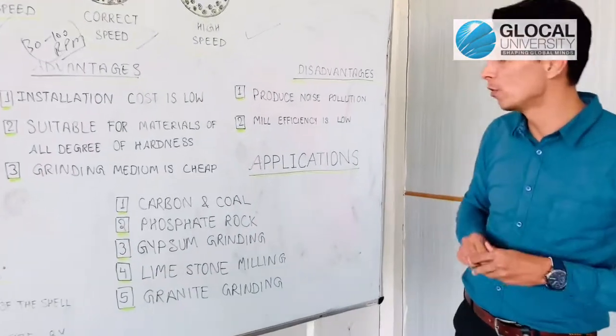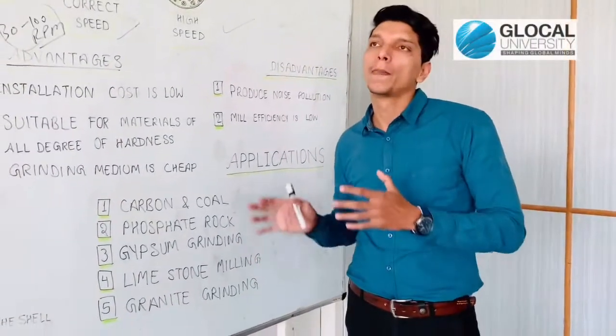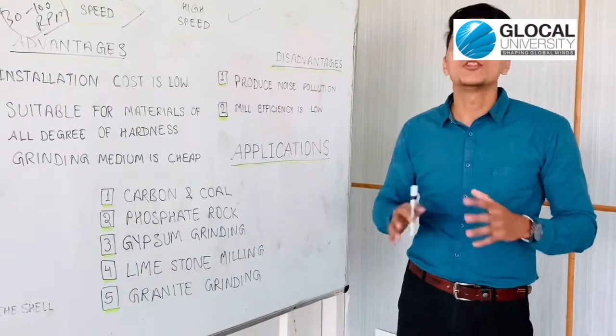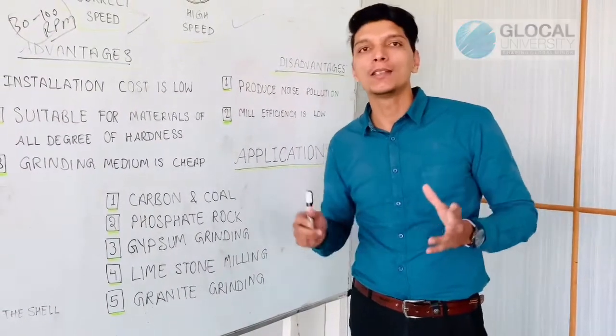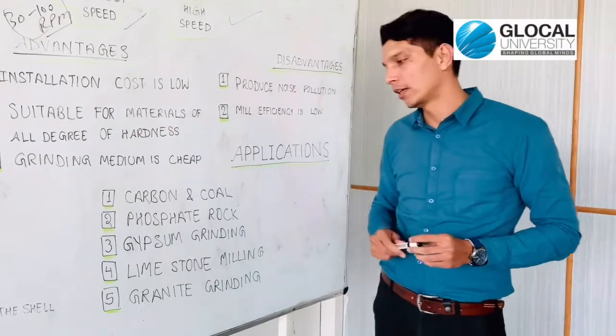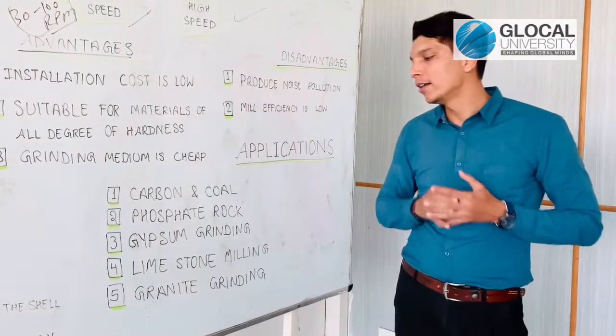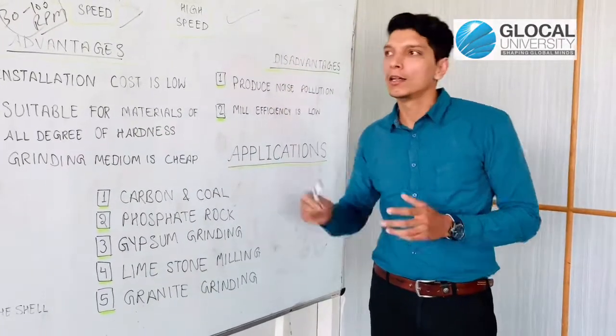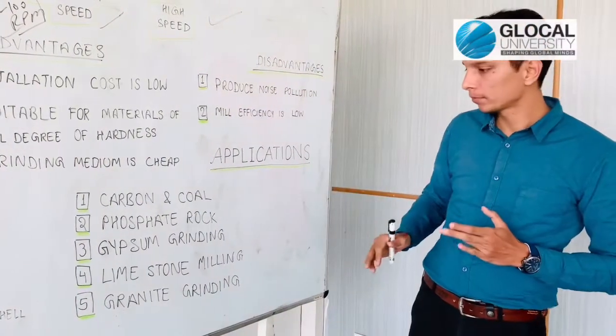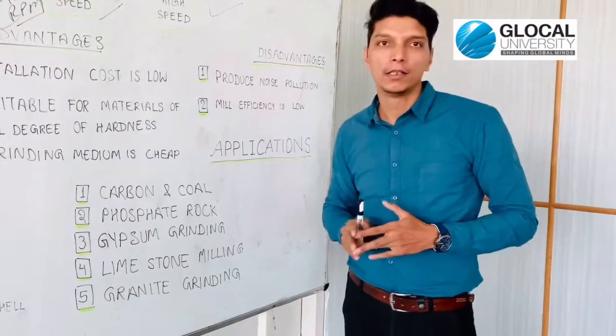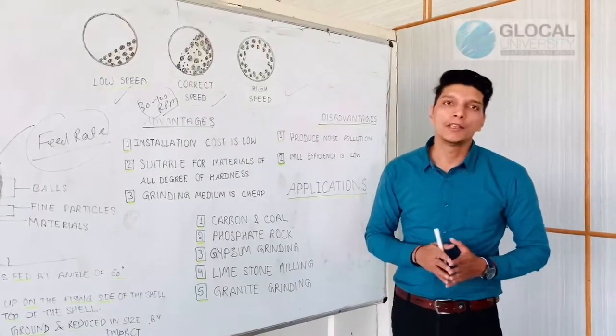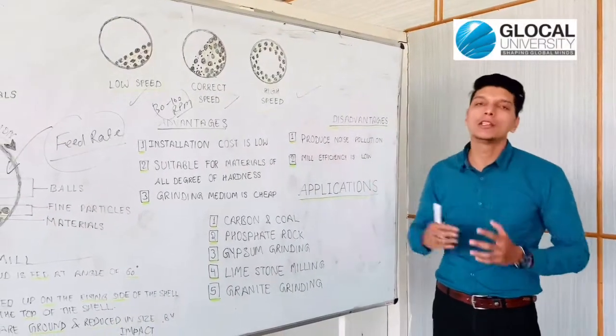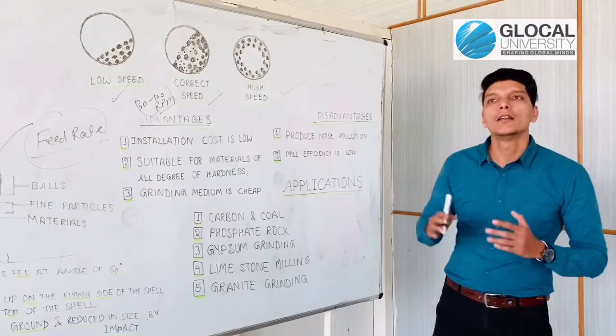Next is limestone milling. This mill is used for limestone in factories. Next is granite grinding. This mill is also used for materials like marble. These are the various applications of ball mills used in pharmaceuticals, cement, and coal mining industries.